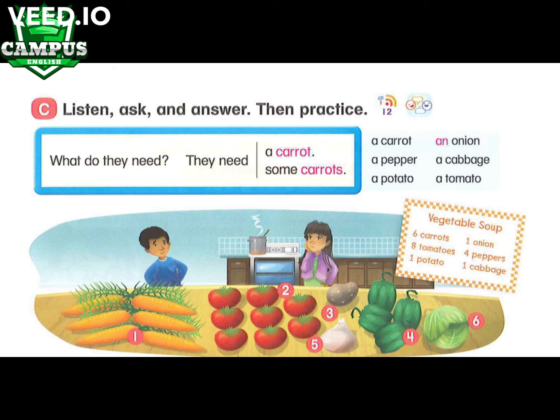What do they need? They need a potato. What do they need? They need some peppers. What do they need? They need an onion. What do they need? They need a cabbage.